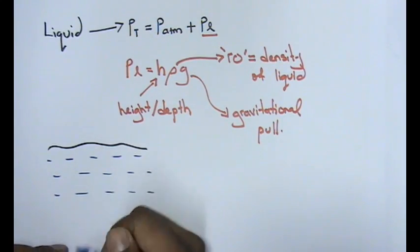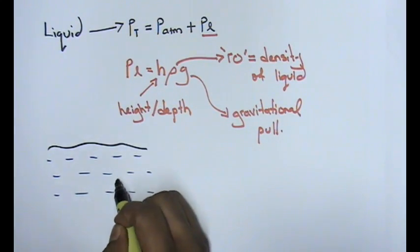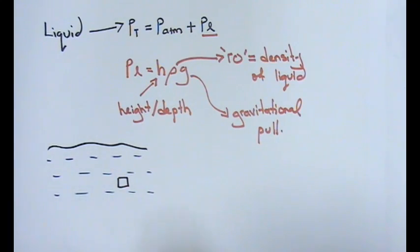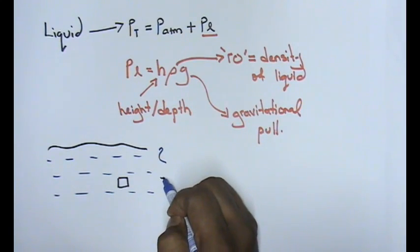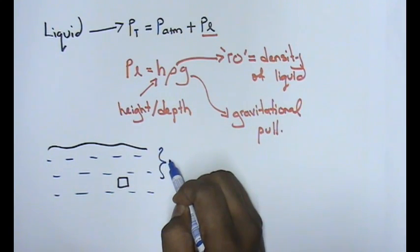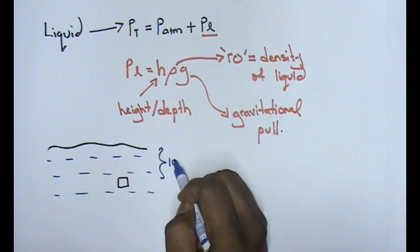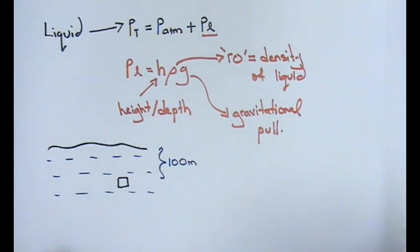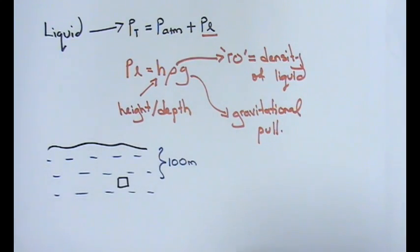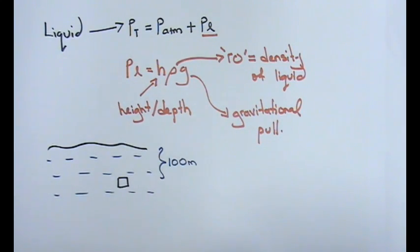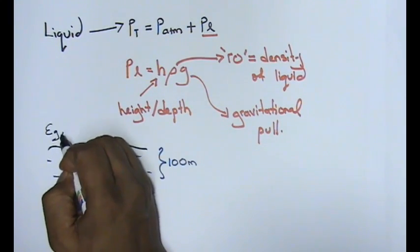For an example, we have an object as what I've drawn over here, and the distance of the object from the surface of the water, let's just say, is 100 meters. That's the distance of the object from the surface of the water. My question to you is what is the liquid pressure.